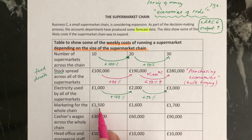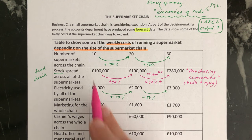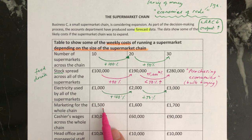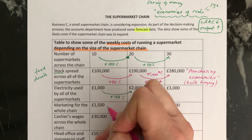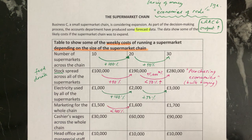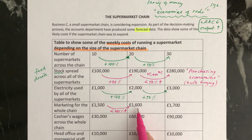So for marketing — for example advertisements and promotions to let people know about the business — if you've got 10 shops in the chain the amount you're spending on marketing used to be £1,500. When you have 20 shops it only goes up by £100, to £1,600. That is definitely not a 100% increase. So this is less than a 100% increase, and therefore you don't have to make double the amount of payment as before — you just pay a little bit more.